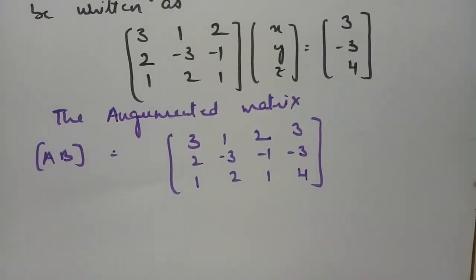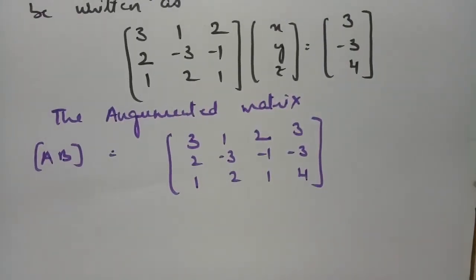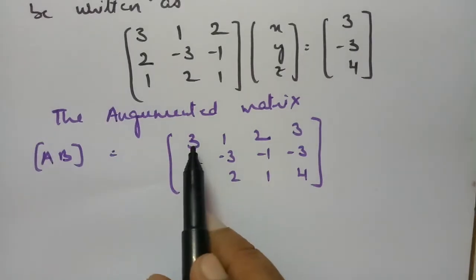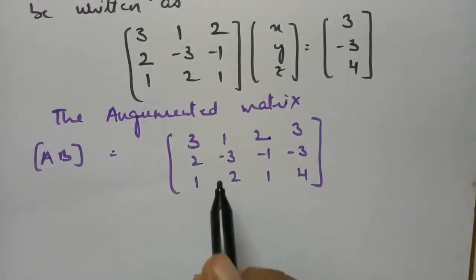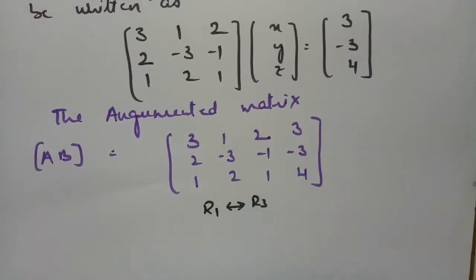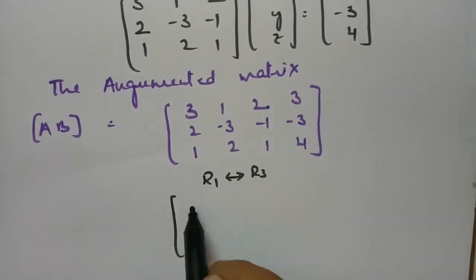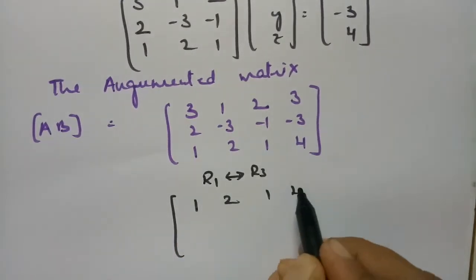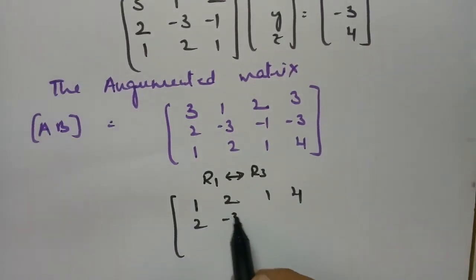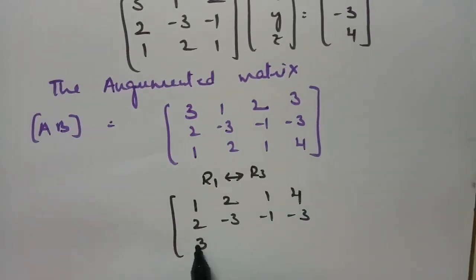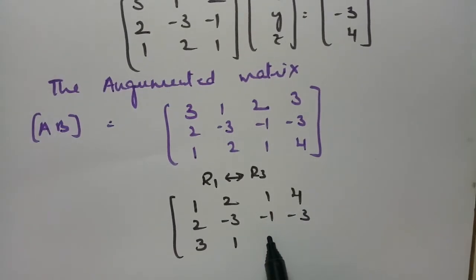Now we have to find the rank of the matrix. For convenience, I need a 1 in row 1, so I am interchanging row 1 and row 3. After the interchange: row 1 becomes 1, 2, 1, 4; row 2 stays as 2, minus 3, minus 1, minus 3; and row 3 becomes 3, 1, 2, 3.